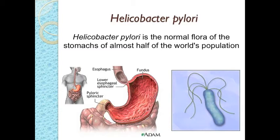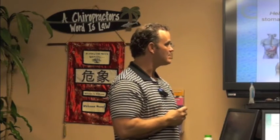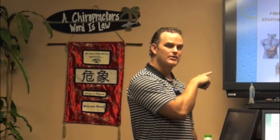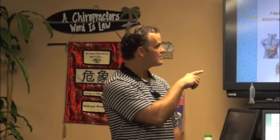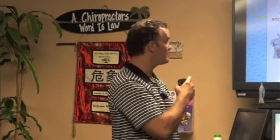Helicobacter pylori — this is what causes ulcers. It burrows down into the lining of your stomach. It's not stress, it's not pizza — it's this bacteria. What they've found now is that it's actually when the goblet cells aren't functioning properly — the cells that secrete mucus into the lining of the stomach to protect it from the hydrochloric acid. If there's any dysfunction there, from lack of nerve flow or circulation, these bacteria actually swoop in to help protect that area. They're actually beneficial to the stomach.